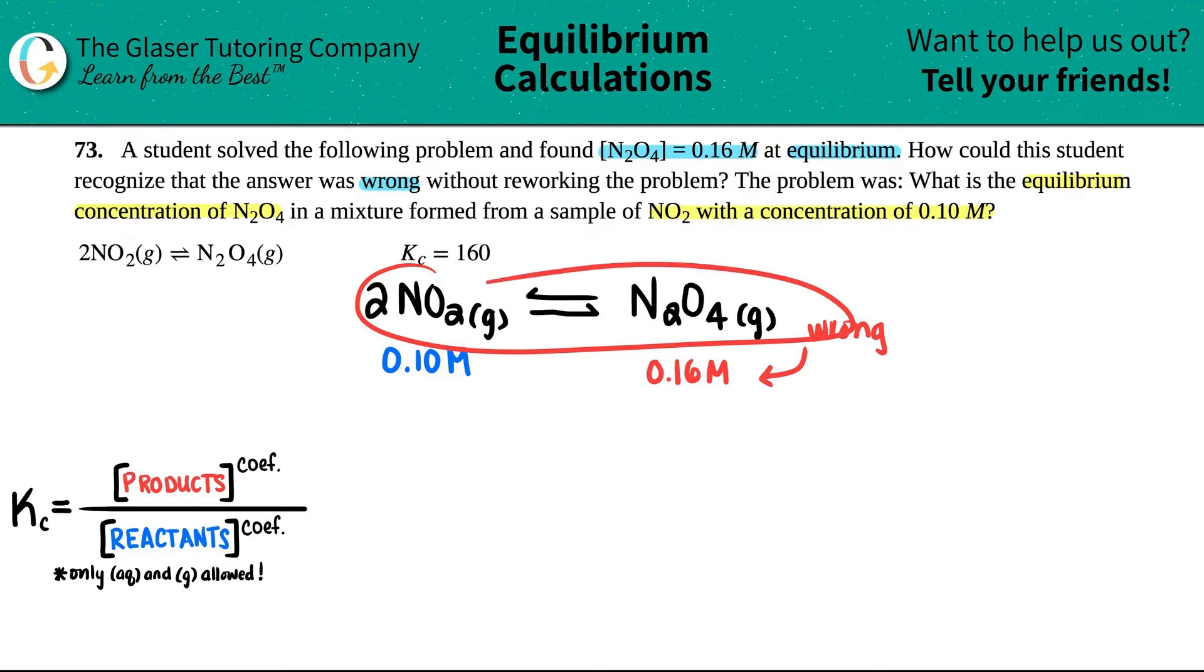What we can do is we can get a generalized equation for this. Remember, only aqueous and gases are allowed, so always check those states. But these are both gases so they're both going to be in my expression. Let's write out the expression: Kc equals the concentration of the products. I have one product, N2O4, and it has to be raised to the coefficient. There was no number here—remember that means there was one of them—so I could raise it to the first but I don't have to. Then divided by the concentration of NO2, and then I have to raise it to the coefficient. In this case I do see a 2, so I have to square it.